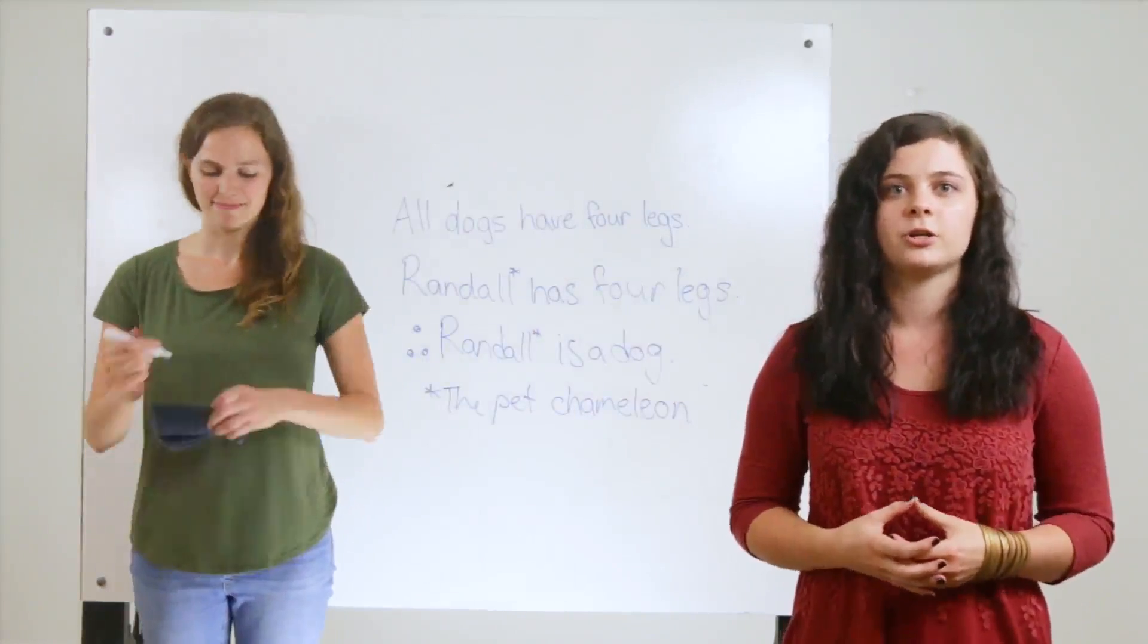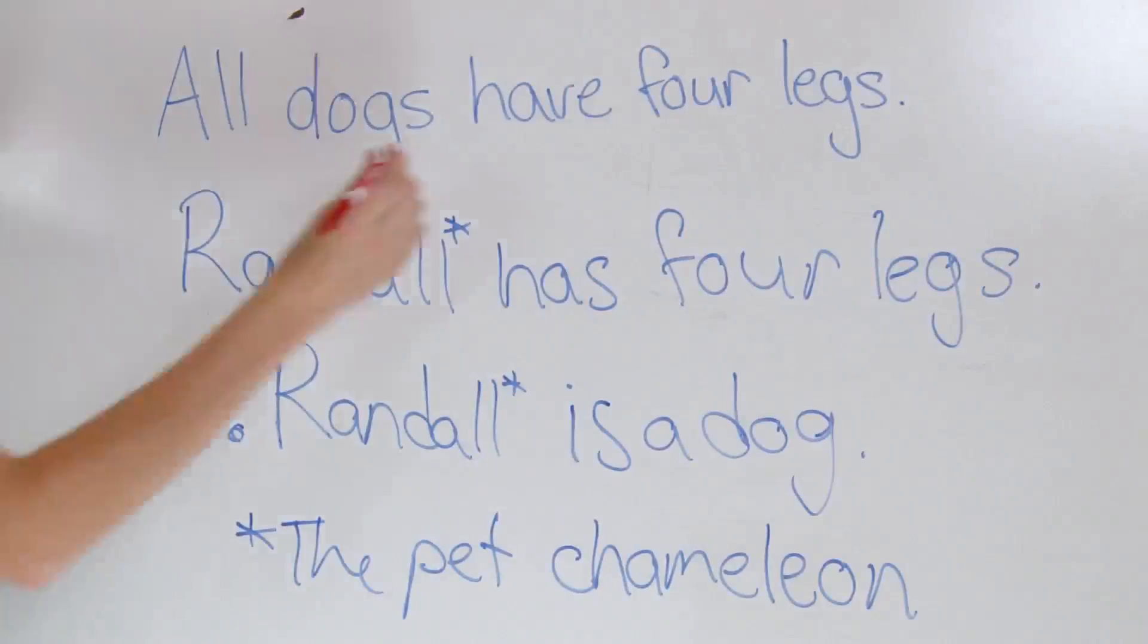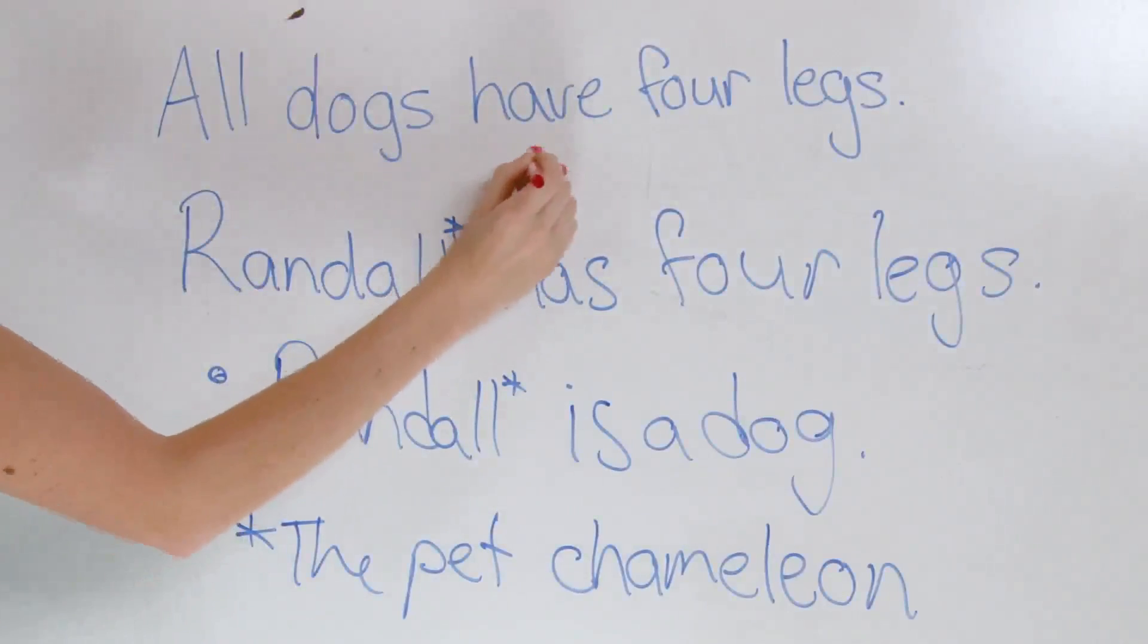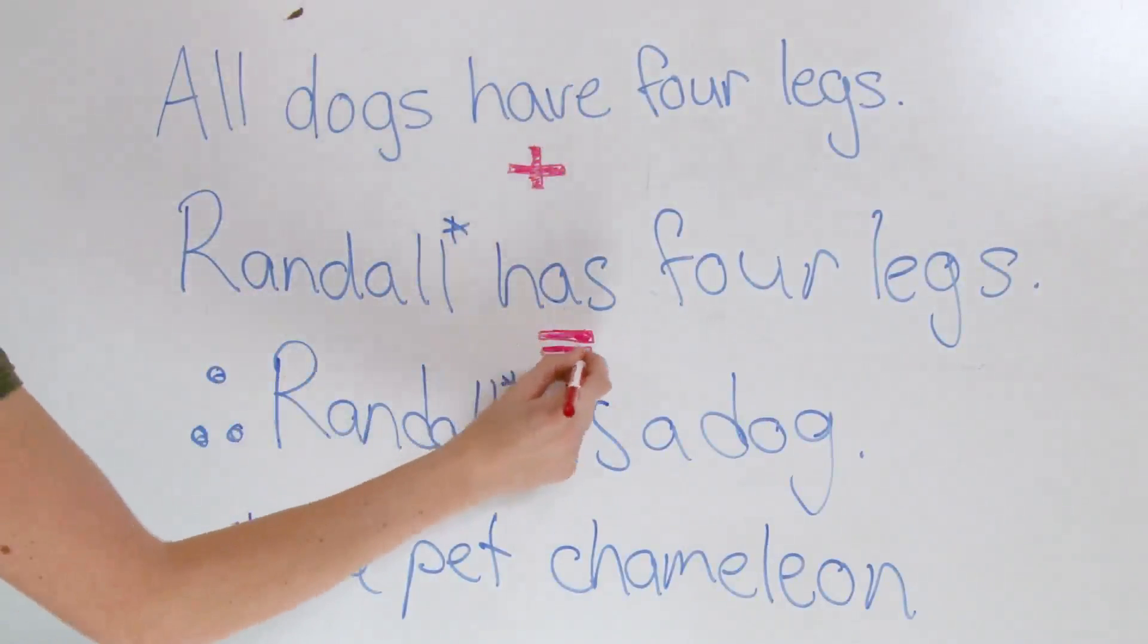But not all creatures with four legs are dogs. The statements are true, but because a syllogism's structure is invalid, the syllogism is unsound.